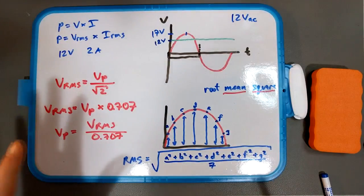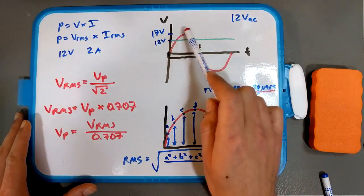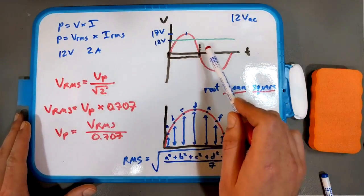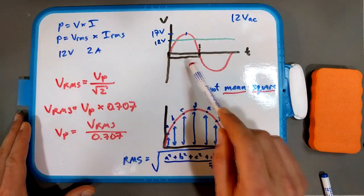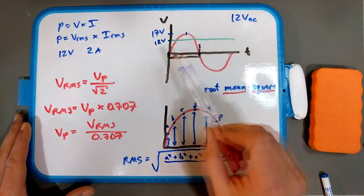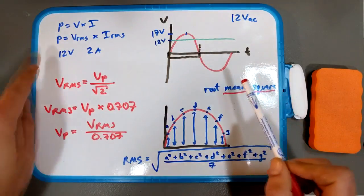The whole idea here is that we need some kind of value. Even though it's peaking at 17, blah blah blah, the RMS value is used such that when you're actually doing power calculations, i.e. P equals VI, this 12 volts AC, by using the RMS value, it essentially becomes equivalent to 12 volts DC. So you can simply do P equals VI.